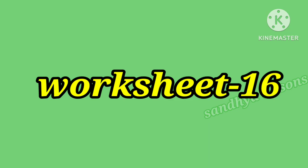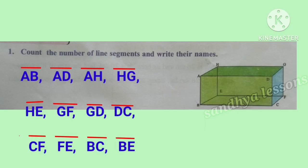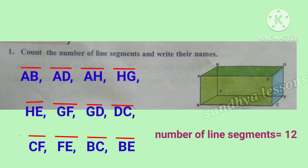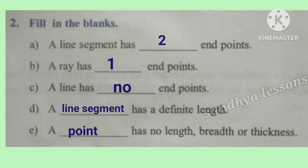Worksheet 16. First problem: count the number of line segments and write their names. The number of line segments in the given picture is 12. Second problem: fill in the blanks. A line segment has two endpoints. A ray has one endpoint. A line has no endpoints. A line segment has a definite length. A point has no length, breadth, or thickness.